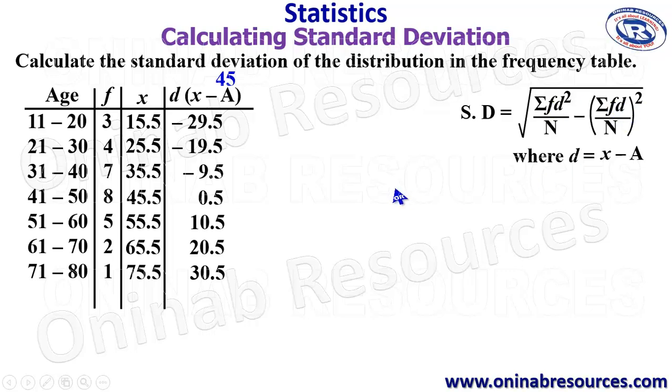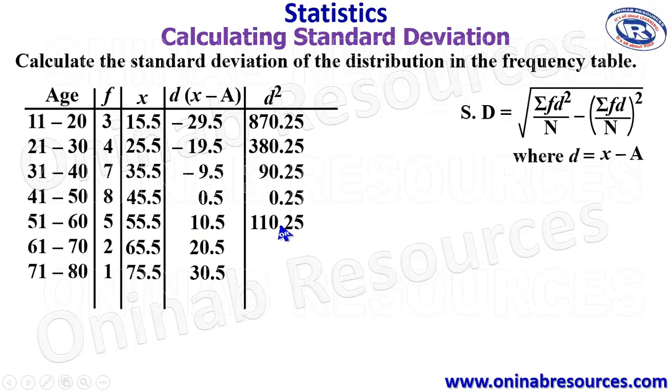So the next thing is to get our d squared before we multiply by f and fd. So we need to get our d squared. This is our d, which means we are going to be squaring this. Negative 29.5 squared gives 870.25. Negative 19.5 squared gives 380.25. Negative 9.5 squared gives 90.25. 0.5 squared gives 0.25. 10.5 squared gives 110.25. 20.5 squared gives 420.25. 30.5 squared gives 930.25.